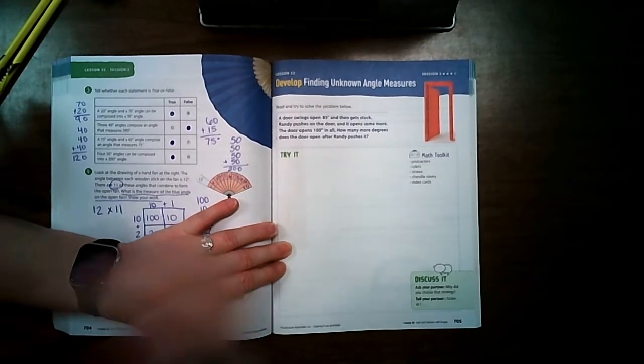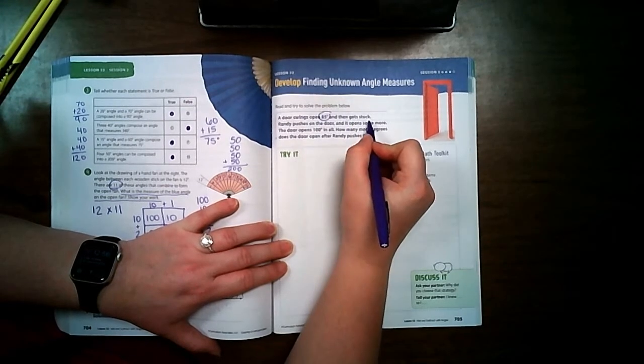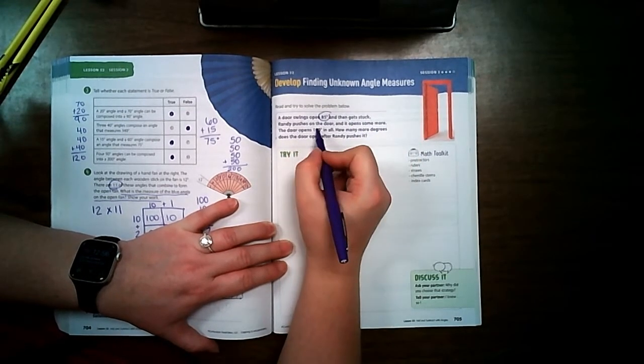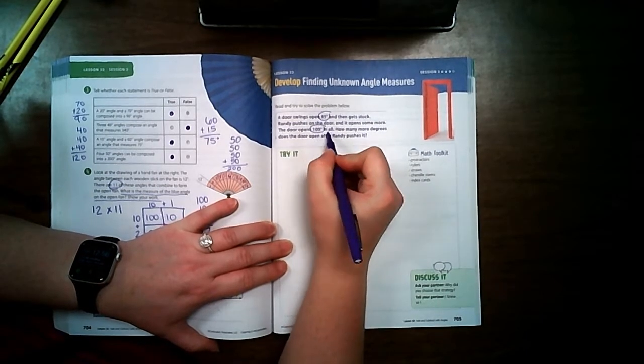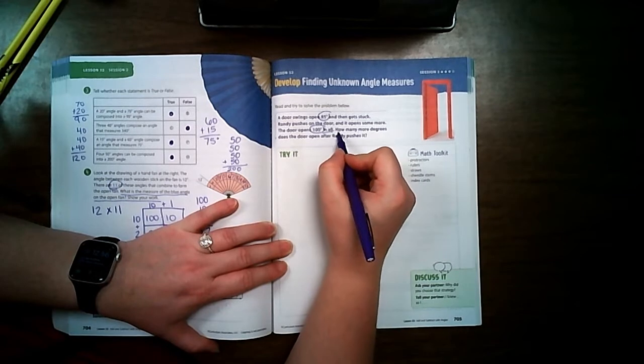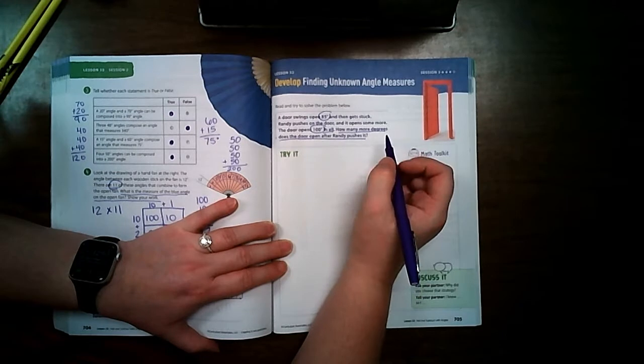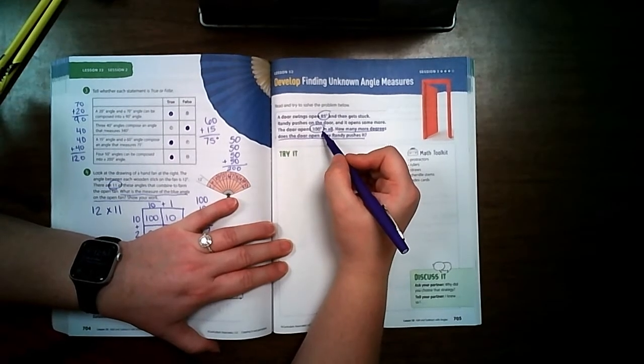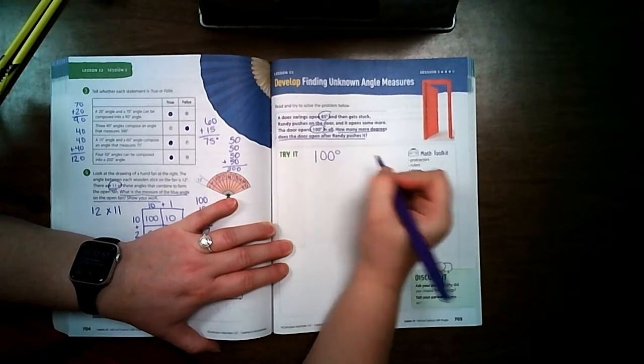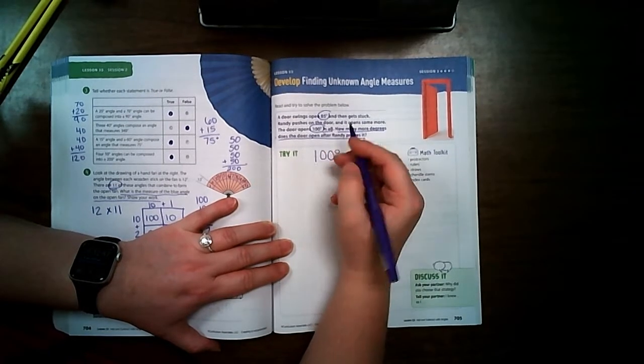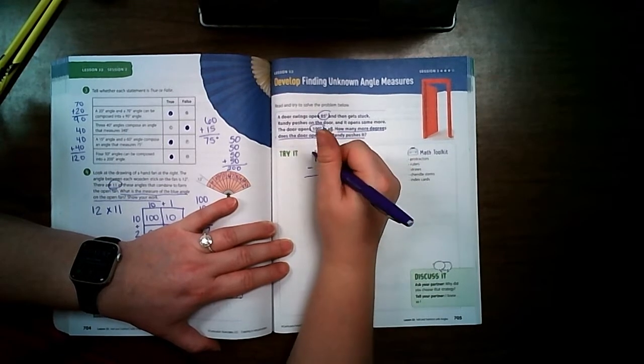A door swings open 85 degrees and then gets stuck. Randy pushes on the door and it opens some more. The door opens 100 degrees in all. How many more degrees does the door open after Randy pushes it? So right here it says it finishes at 100 degrees. But the first time it opened it was 85 degrees, so when Randy pushed it, it ended up being 15 degrees.